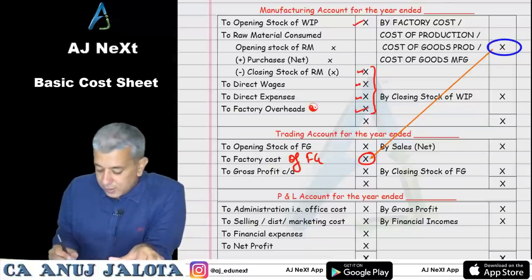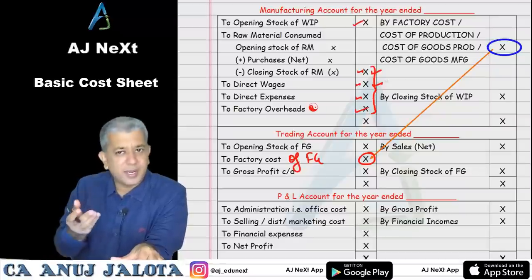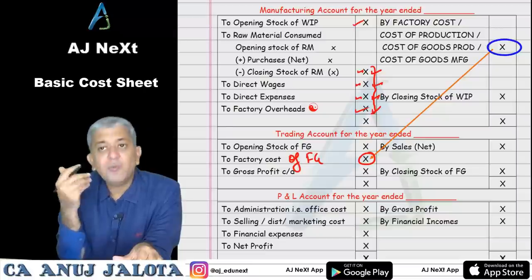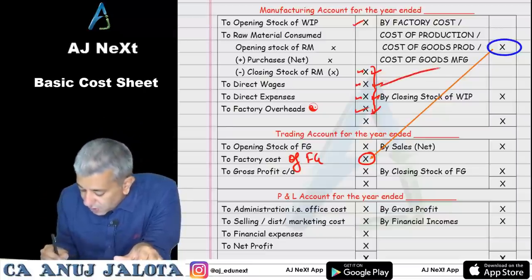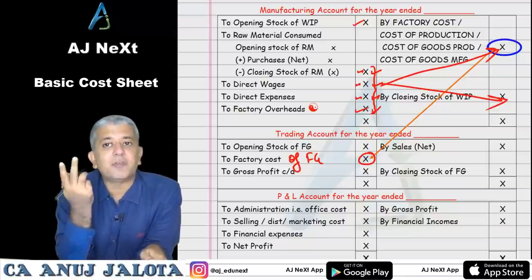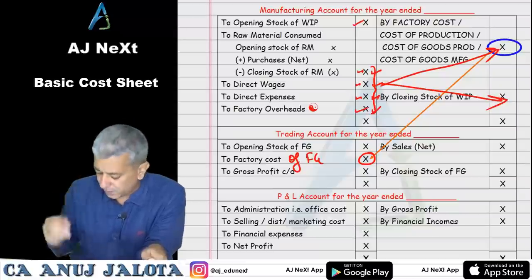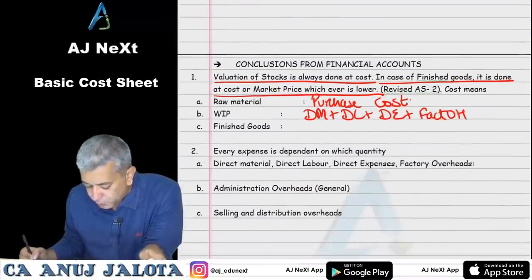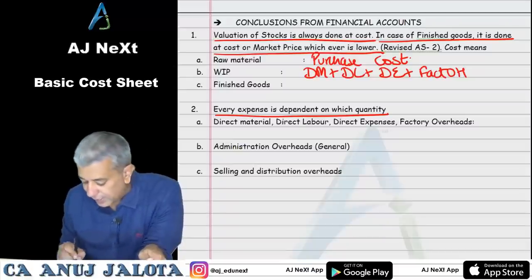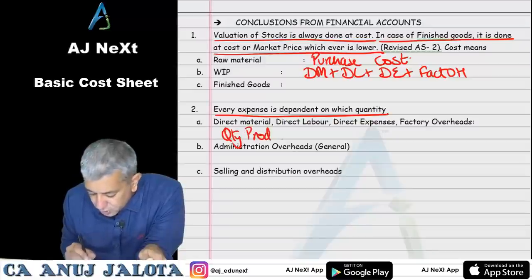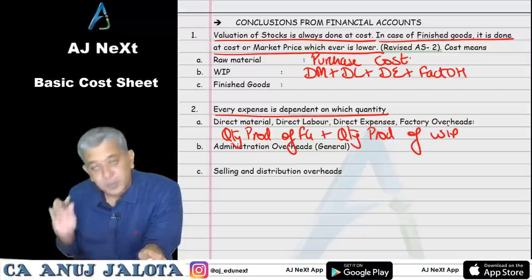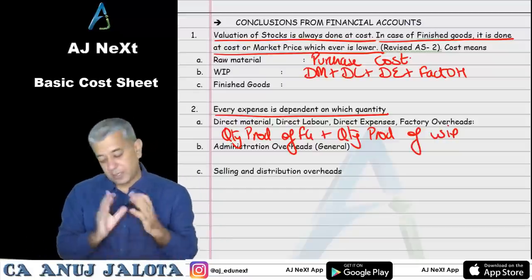Point number two: direct material, direct labor, direct expenses, and factory overheads are incurred for quantity produced of finished goods plus quantity produced of WIP. The manufacturing account covers both finished goods and WIP manufacture. Net factory cost then moves to the trading account, which deals only with selling — and we sell finished goods.